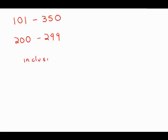Inclusive counting, because the number 101 as well as the number 350, these are both included. We can't simply subtract when we're doing inclusive counting. What we have to do is subtract and then add one.